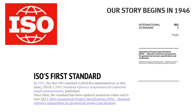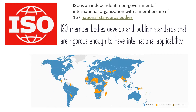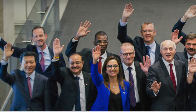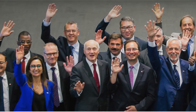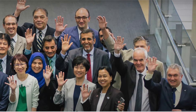ISO is an international standard-setting body involved with promoting worldwide proprietary, industrial, and commercial standards. It is headquartered in Geneva, Switzerland, but through its 167 national standards bodies, it brings together expertise to develop voluntary, consensus-based, market-relevant international standards. Importantly, it is an independent, non-governmental organization, with standards influenced by 167 member bodies, each representing their country.